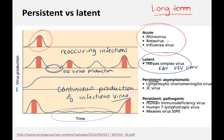Persistent asymptomatic means you're always producing a little bit of virus but not really having any disease. Persistent pathogenic is similar to latent — I've seen HIV called both latent and persistent — but the difference is you're always making a little bit of virus in persistent infections, and then sometimes you have these recurring bursts of viral production.